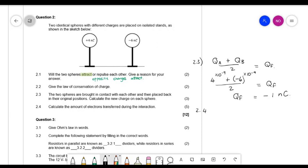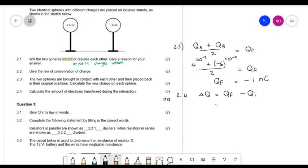Then they ask you, calculate the number of electrons transferred. So for that you have to say delta Q is equal to the final minus the initial. And you can choose either one of the spheres. So I'm just going to work with the first one, with the positive 4. And for this one, I'm going to actually put it into nanocoulomb.